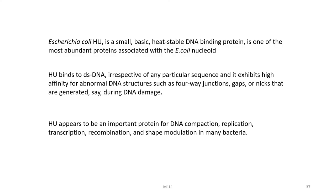E. coli HU protein is a small basic heat-stable DNA binding protein and is one of the most abundant proteins associated with the E. coli nucleoid. HU binds to double-stranded DNA irrespective of any particular sequence — it is not a sequence-specific binder and exhibits high affinity for abnormal DNA structures such as four-way junctions, gaps, or nicks generated during DNA damage. HU appears to be an important protein for DNA compaction, replication, transcription, recombination, and shape modulation in many bacteria.